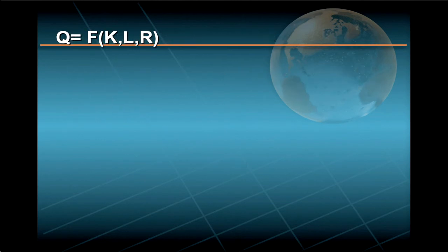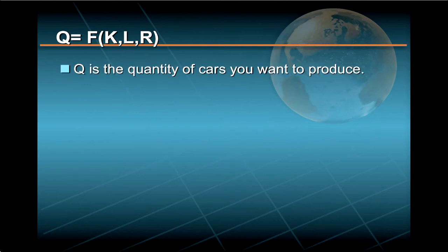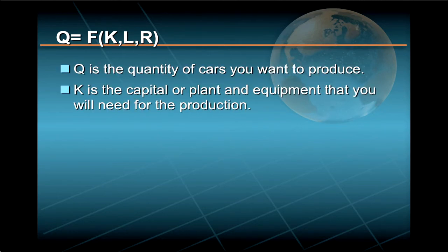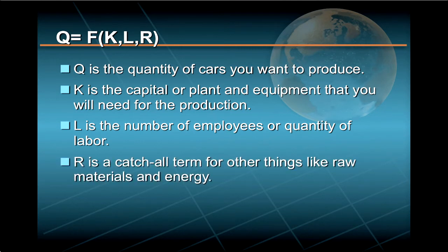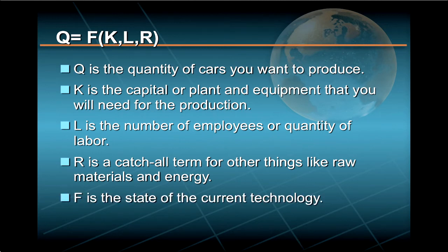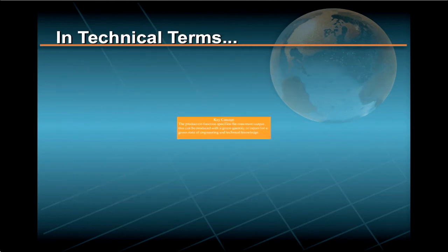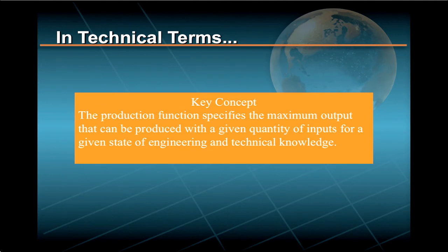Q is your output, and K, L, and R are your factor inputs. Specifically, Q is the quantity of cars you want to produce. K is the capital or plant and equipment that you will need for the production. L is the number of employees or quantity of labor. And R is a catch-all term for other things like raw materials and energy. As for that F term, that is the state of the current technology. The more advanced the technology, the more output you will be able to produce for a given mix of labor, capital, and resource inputs. In technical terms, the production function specifies the maximum output that can be produced with a given quantity of inputs for a given state of engineering and technical knowledge.